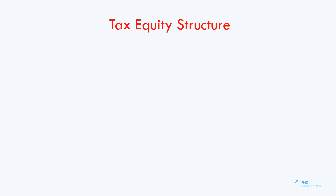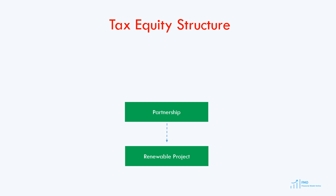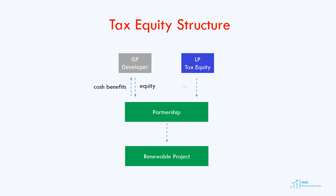A typical, albeit simplified, tax equity structure looks like this. We have the partnership which develops the renewable project, such as wind or solar. Then we have the general partner, which invests equity in the project and receives cash benefits. And then we have the limited partner, which invests equity as well; however, it gets only the tax benefits of the partnership.